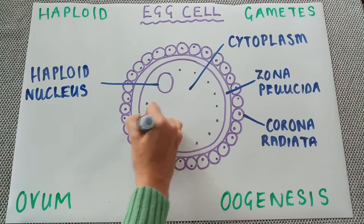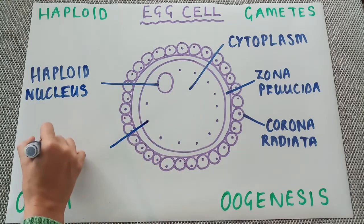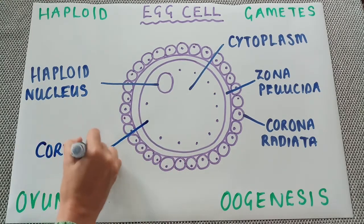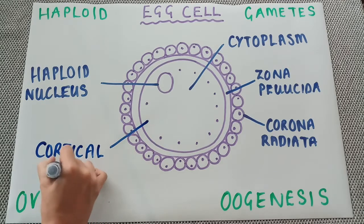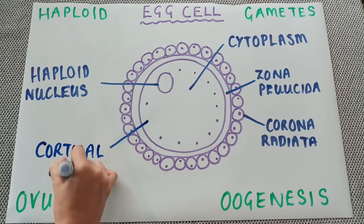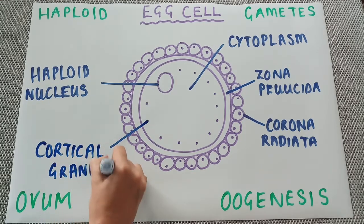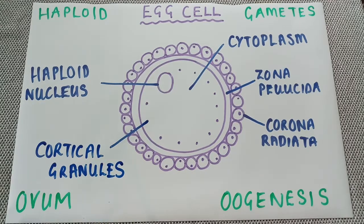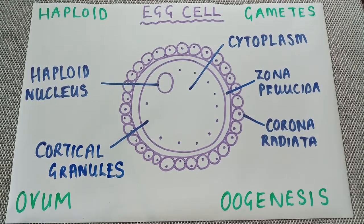These little dots here are called cortical granules. They are there to prevent polyspermy, which is something we will cover in a later video. It simply means that only one sperm is allowed to fertilise the egg during fertilisation.